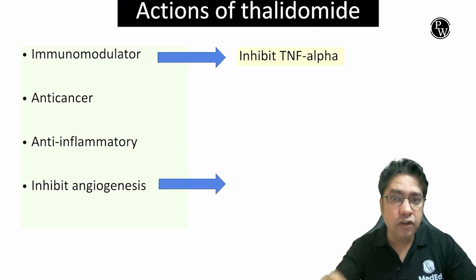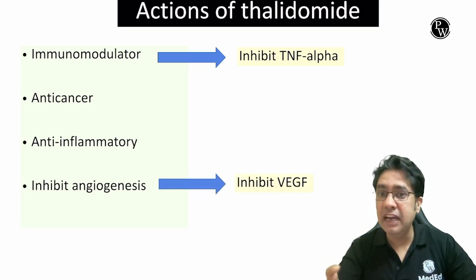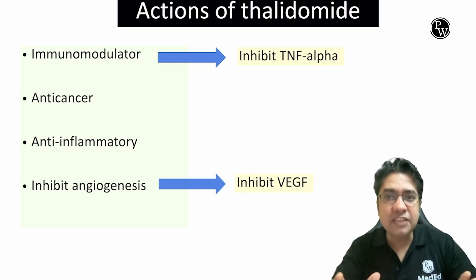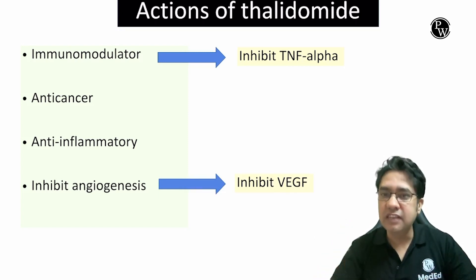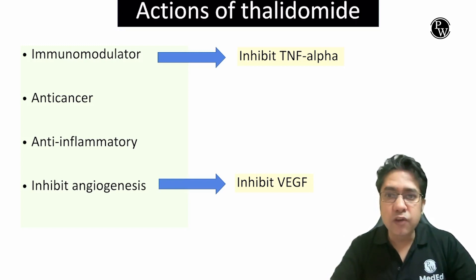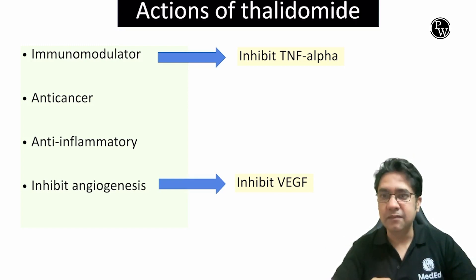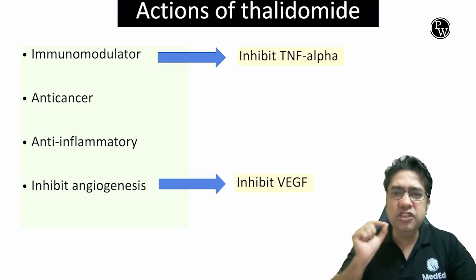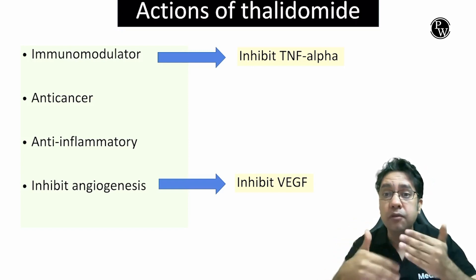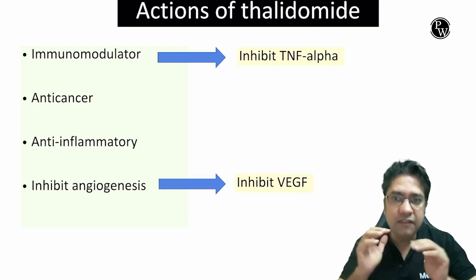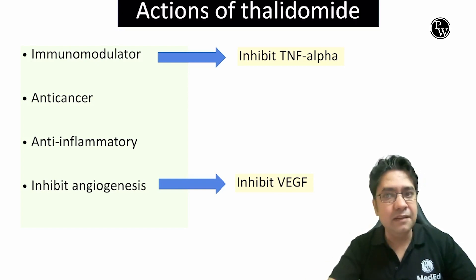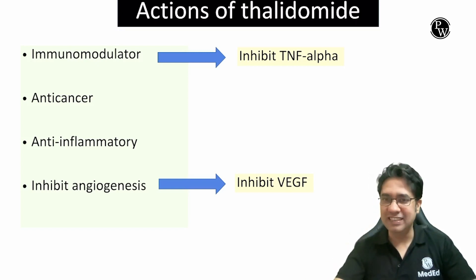And how does Thalidomide inhibit angiogenesis? It inhibits the production of one protein — VEGF, which stands for Vascular Endothelial Growth Factor. This VEGF is responsible for the formation of new blood vessels. By suppressing VEGF production, it inhibits angiogenesis.